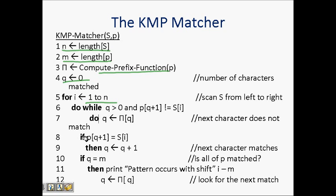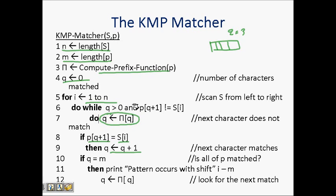i runs from 1 to n. If p[q+1] equals s[i], it means at least one character has matched, so q is incremented. But if there was partial matching — say q was 5, it matched till 3 and then did not match — we need to slide the window. The next shift is given by q = pi[q], because pi has the knowledge of how much shifting we should do so that a prefix which is also a suffix is still matching.